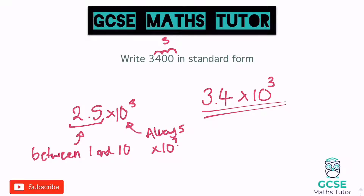Thinking about what this means: 3.4 times 10 times 10 times 10 is times 1000, and 3.4 times 1000 is 3,400. So we're writing it in a standard format — it's a little bit shorter, particularly if we have a lot of zeros.